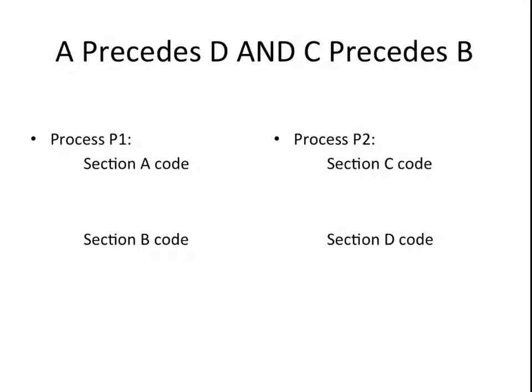Finally, let's consider one last set of constraints. In this case, we want to ensure that the first section of both processes P1 and P2 run before the second section of processes P1 and P2. In other words, A must precede B and D, and C must precede B and D. The constraint that A must precede B and C must precede D is satisfied by default because the code is always executed in order. This means that our constraint reduces to A preceding D and C preceding B.